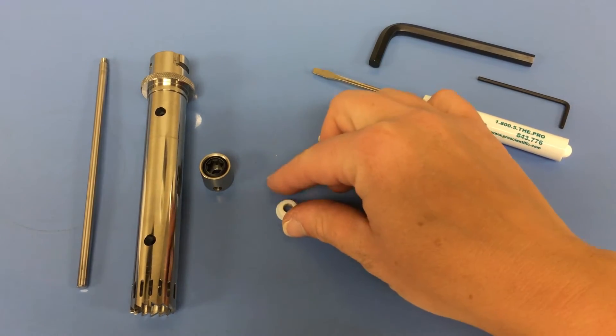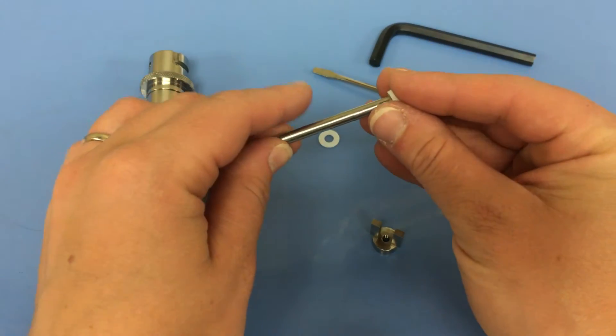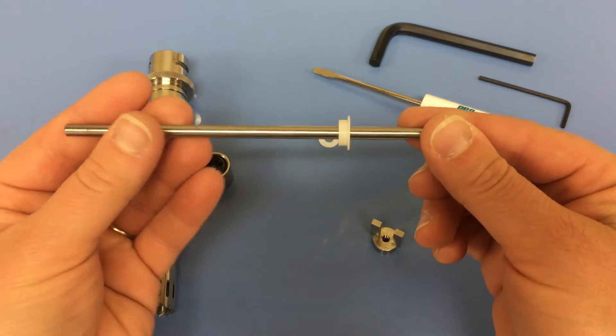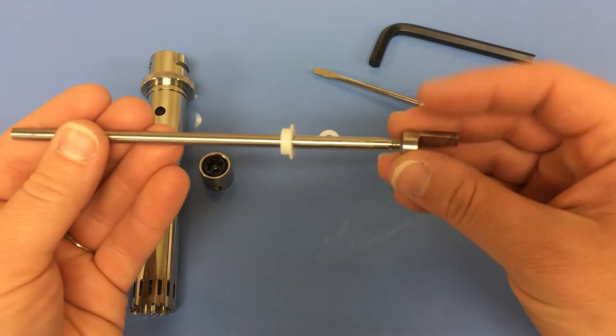Slide the lower bearing onto the rotor shaft. Attach the rotor knife to the rotor shaft by screwing it together until tight. Hand tighten it only.